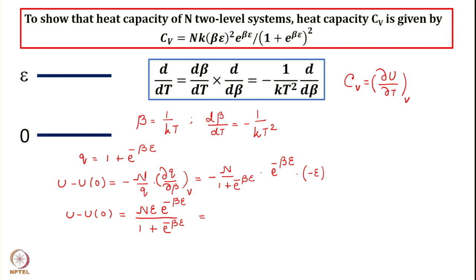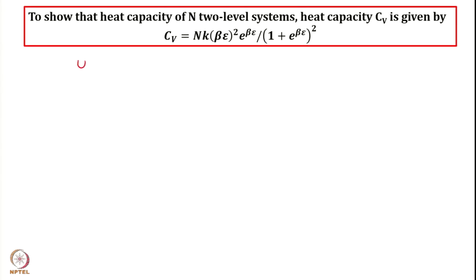We can further simplify this by multiplying numerator and denominator by exp(+βε). The upper term then becomes 1, giving U − U₀ = Nε / (exp(βε) + 1). This is a simpler form of the internal energy expression. Taking its derivative with respect to temperature or with respect to β will yield the heat capacity.